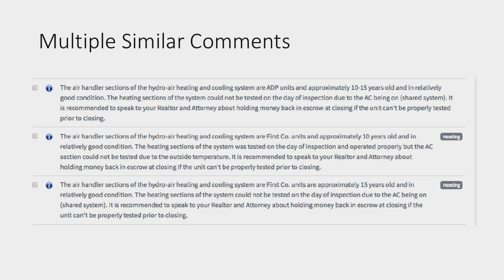Here is an example of a bunch of similar comments — all talking about an air handler of a hydro-air system, but the only difference is the manufacturer and the age. When you run into an air handler for a hydro-air heating and cooling system, which one are you going to use? You probably have more than three because every iteration of manufacturer and age changes. You want to stay away from using multiple similar comments. Save a very generic comment and, if you wanted, just put the age in there. With a simple comment and a couple of photos — one of the unit and one of the data plate — you get all the same information.